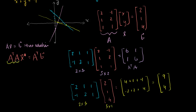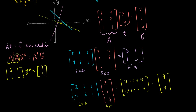We can rewrite the normal equation as the matrix [[6, 1], [1, 6]] times our least squares solution equals the vector [9, 4]. This will have a solution — we proved it in the last video. To find it, let's create an augmented matrix: [6, 1 | 9] and [1, 6 | 4]. First, I'll swap the two rows to get a nice pivot entry of 1.